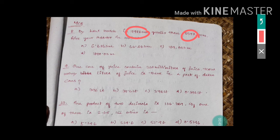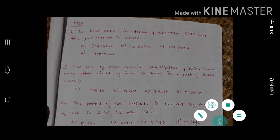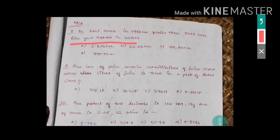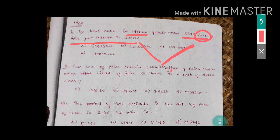First of all, read the question properly — the answer should be in meters. So what you will do: convert the centimeters to meters, and also convert the millimeters to meters. Both numbers need to be in meters. This one is in centimeters, this one is in millimeters — convert both into meters so you have two numbers in meters.